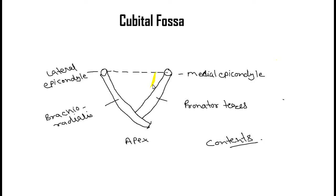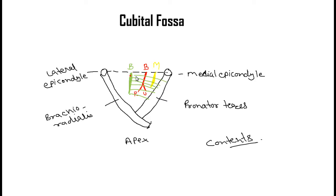Now we will see the contents of the fossa. On the most medial side we have the median nerve. Lateral to the nerve we have the brachial artery, which divides into two branches — radial and ulnar — within the fossa. Lateral to the artery we have the tendon of biceps brachii, which gives some fibers toward the medial side that cover the artery and nerve; these fibers are the bicipital aponeurosis. Lateral to the tendon we have the radial nerve.